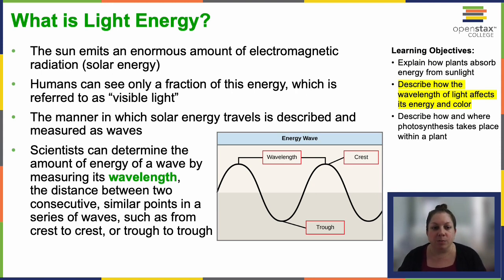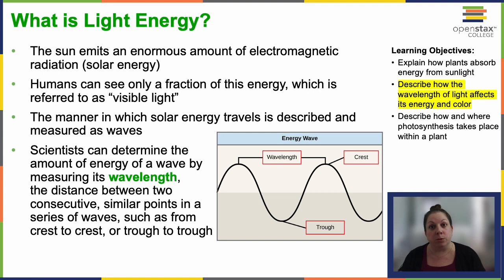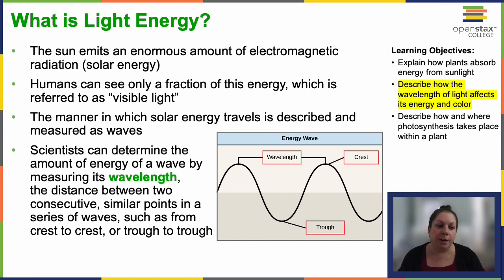So what is light energy? The sun releases an immense amount of solar energy in the form of what we call electromagnetic radiation. Among this energy, we can only perceive a very small portion called visible light. Other parts include ultraviolet radiation, microwaves, radio waves — all of that the sun emits, and much more.